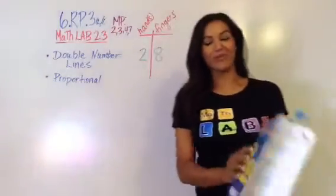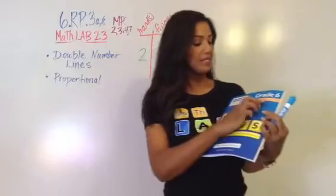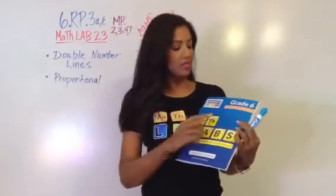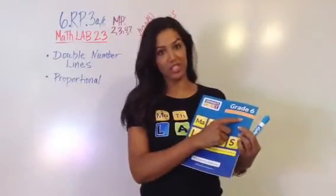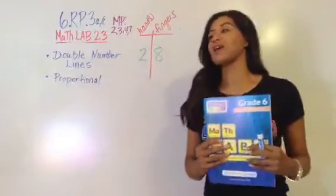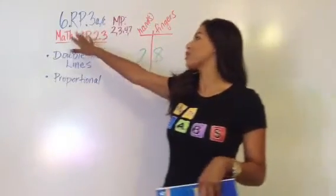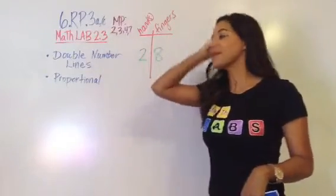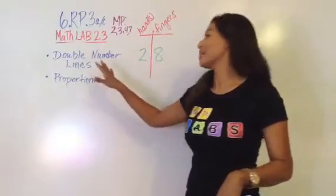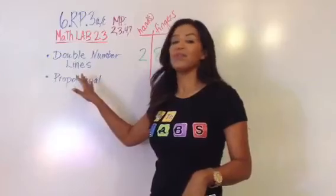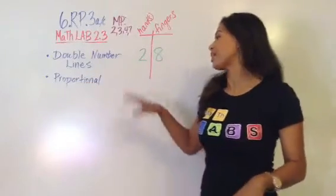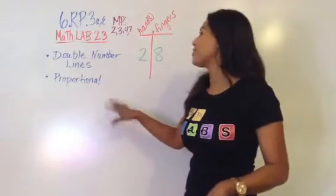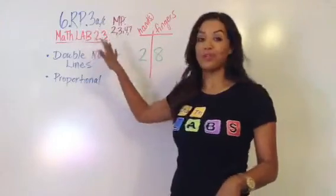Hi everyone, Alicia McGill here with MathLabs. Today we are in grade 6, the second unit, Ratio and Proportional Relationships, and this corresponds with Common Core Content Standard 6.RP.3A and C. Basically, students are going to use a double number line to solve problems involving rates, ratios, and proportions. And this is MathLab 2.3.